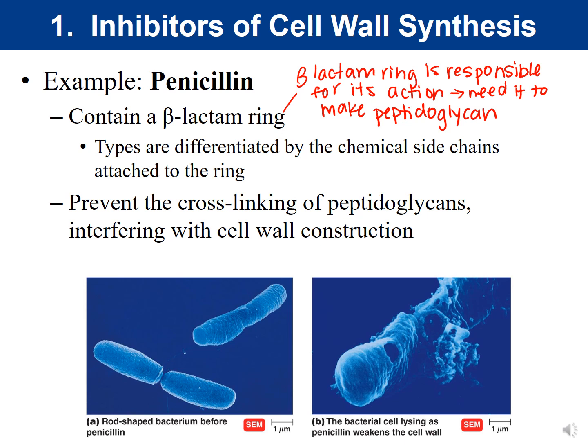The types of penicillins are differentiated by the chemical side chains attached to the rings — these side chains determine which organisms are targeted. These drugs work by preventing the cross-linking of peptidoglycans, which interferes with cell wall construction. A bacterial cell treated with penicillin has a weakened cell wall and ultimately lyses. Penicillin targets gram-positive more than gram-negative because gram-positive bacteria have a thick layer of peptidoglycan.